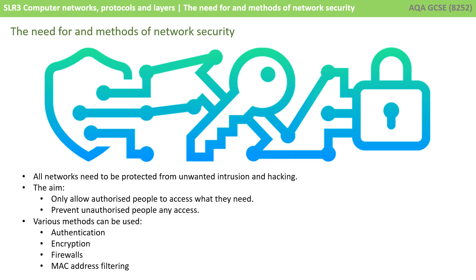There are many methods which can be used to help secure a network. The four you need to know about in the exam are authentication, encryption, firewalls and MAC address filtering. Let's look at each in turn.